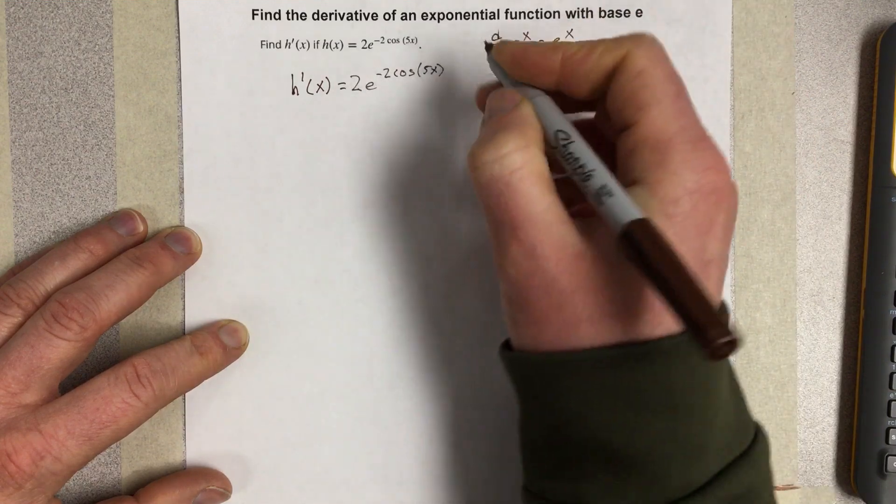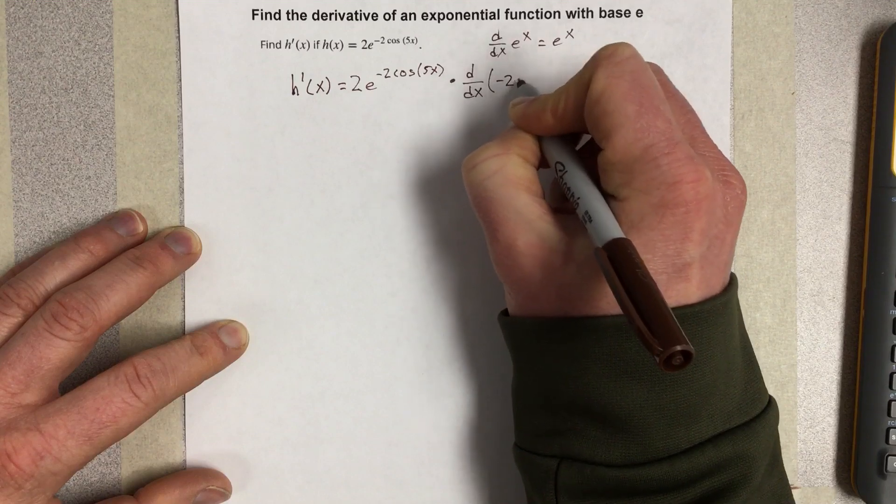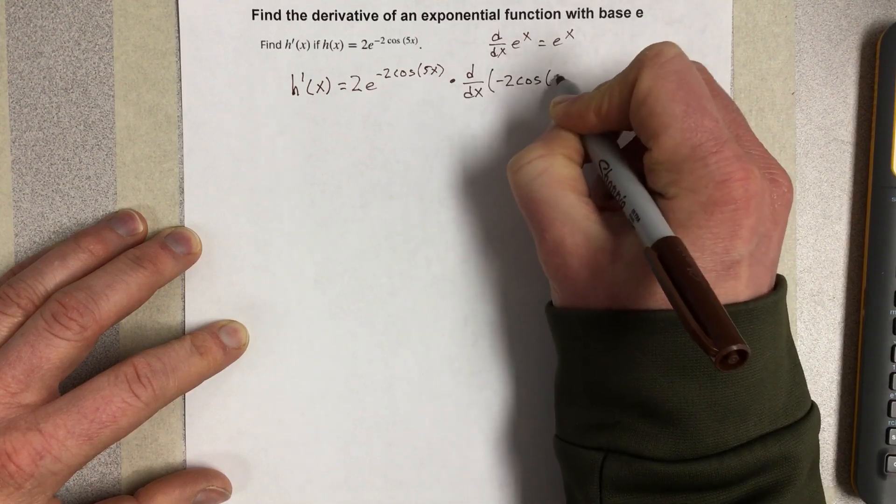So when I'm doing the derivative of the outside, nothing's changing. But I take it times the derivative of the inside, which would be negative 2 cosine of 5x.